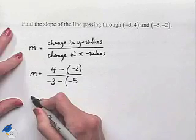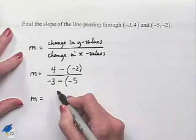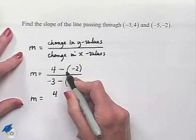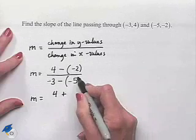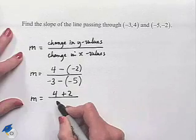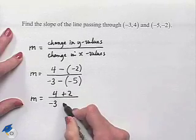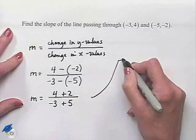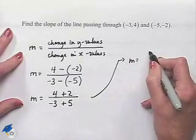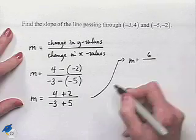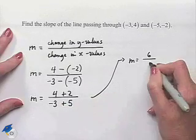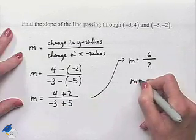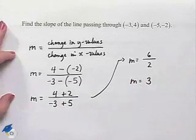Now let's simplify. M is going to equal 4. When we subtract negative 2, that's the same as adding 2. In our denominator, we have negative 3. We're going to subtract negative 5, which is the same as adding 5. Therefore, we come up with M equals 4 plus 2 is 6 divided by negative 3 plus 5, which is 2. We can simplify further to come up with a slope which is equal to 3.